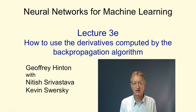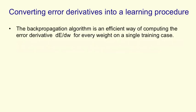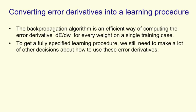For example, we need to decide how often to update the weights and we need to decide how to prevent the network from overfitting very badly if we use a large network. The backpropagation algorithm is an efficient way to compute the derivatives with respect to each weight of the error for a single training case, but that's not a learning algorithm. You have to specify a number of other things to get a proper learning procedure.